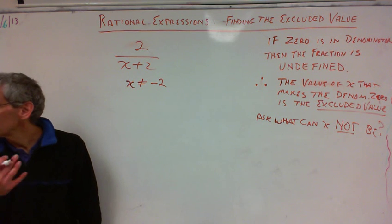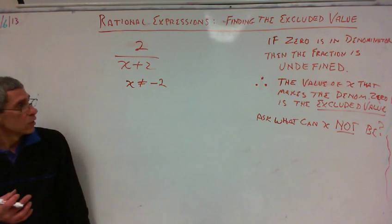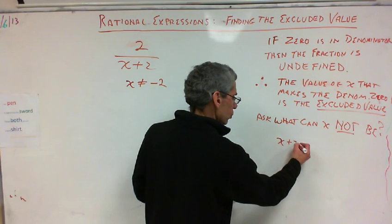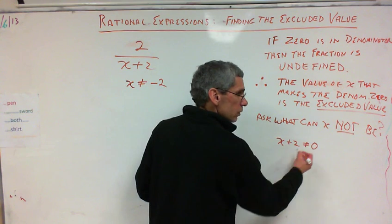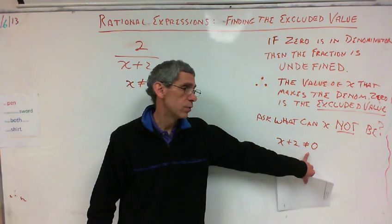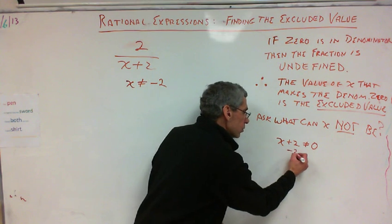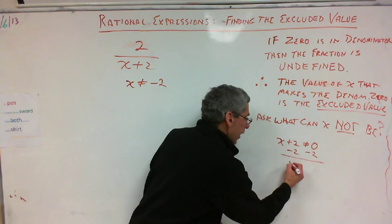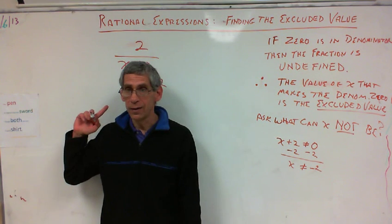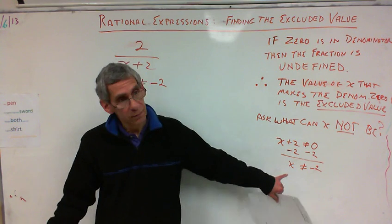And if you ever lost and you can't do it in your head, you can always just set it equal to zero. You can come over here somewhere and say, well, X plus two cannot equal zero. See what I did there? X plus two cannot equal zero. Therefore, I'm going to subtract two, subtract two. X cannot equal negative two. So I can do it in my head when they're easy, or if they're not so easy, I can do it like that. Pretty straightforward.